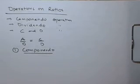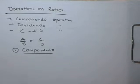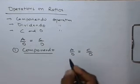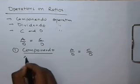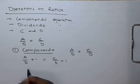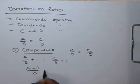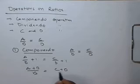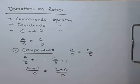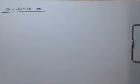From school we may have some memory of the componendo operation: a/b = c/d. If we add 1 on each side, a/b + 1 = c/d + 1, which gives us (a + b)/b = (c + d)/d. This operation is called the componendo operation.